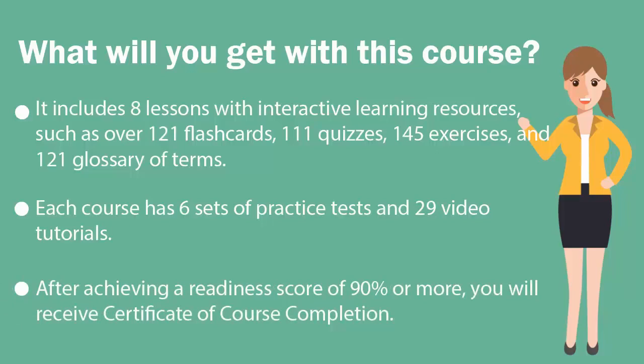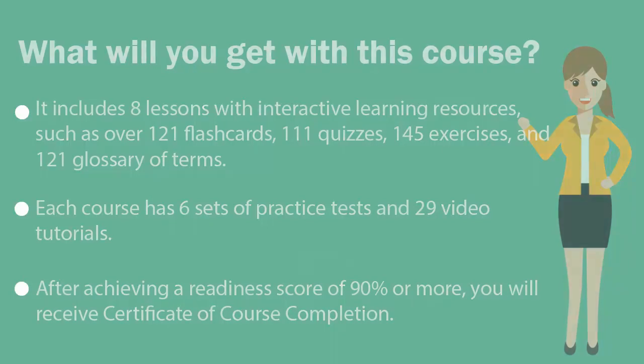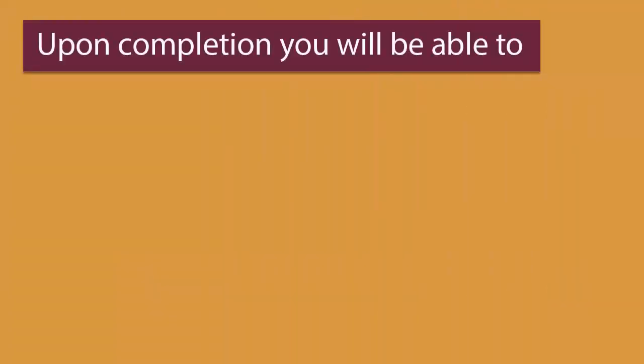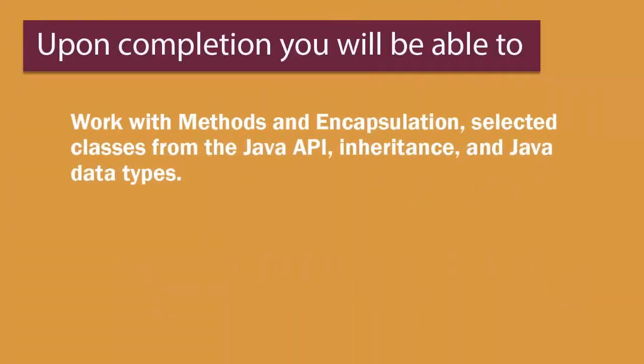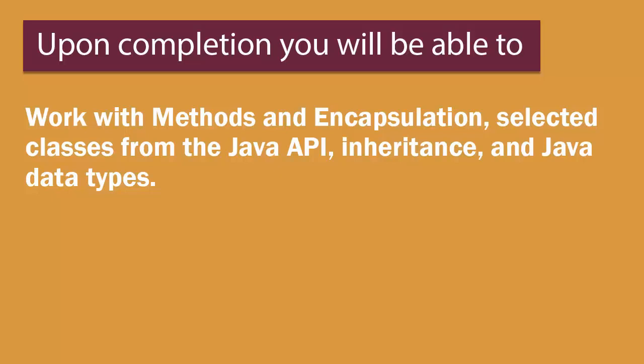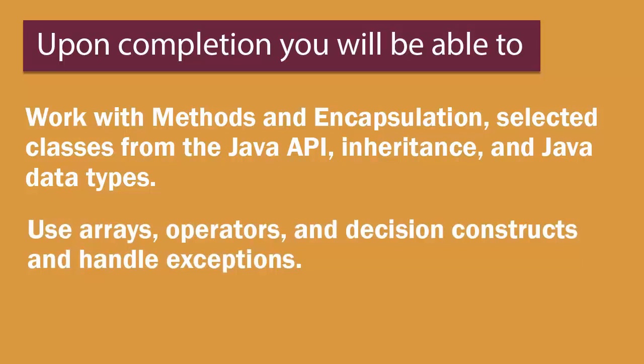Finally, once you achieve a readiness score of 90% or more, you will receive a Certificate of Course Completion from UCertify. Upon course completion, you will be able to work with methods and encapsulation, selected classes within the Java API, inheritance, and Java data types, use arrays, operators, and decision constructs, and handle exceptions.